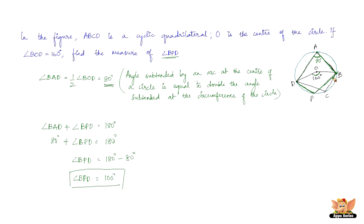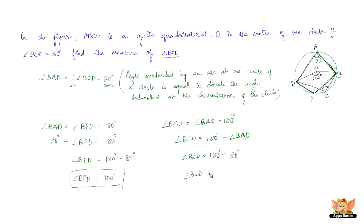The question asked us to find angle BPD, which is 100 degrees. If we also want angle BCD, we consider the cyclic quadrilateral ABCD instead of ABPD. The opposite angles sum to 180 degrees: angle BCD plus angle BAD equals 180 degrees, so angle BCD equals 180 minus 80, which is 100 degrees. Angle BCD and angle BPD are both equal to 100 degrees. This ends the three problems solved in this video; we'll solve more in forthcoming videos.